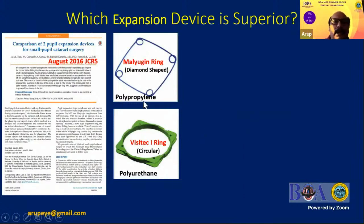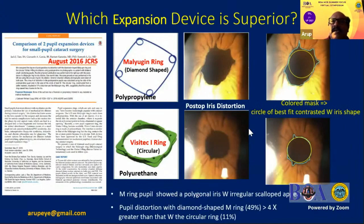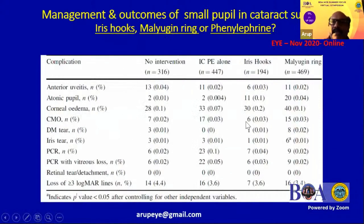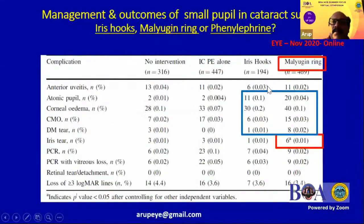Which device is superior? A JCRS study compared the Malyugin ring with the Visitec Eye Ring and found that post-operative pupillary cosmetic outcomes were worse with the Malyugin ring. Another study — the largest published, from the Moorfields group — compared iris hooks, Malyugin ring, and intracameral phenylephrine. The Malyugin ring had the highest incidence of iris sphincter tears. Other complications including tonic pupil, corneal edema, cystoid macular edema, and Descemet's membrane tear were also more frequent in the Malyugin ring group. The take-home message was that although complications were not high with any device, the complication rate was relatively higher with the Malyugin ring.